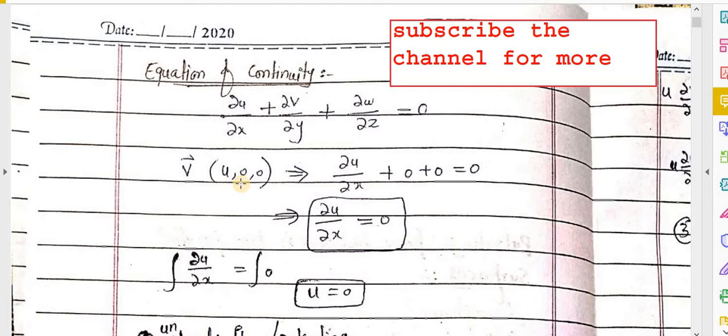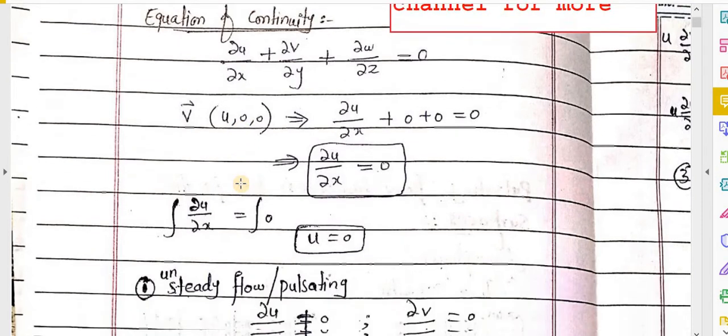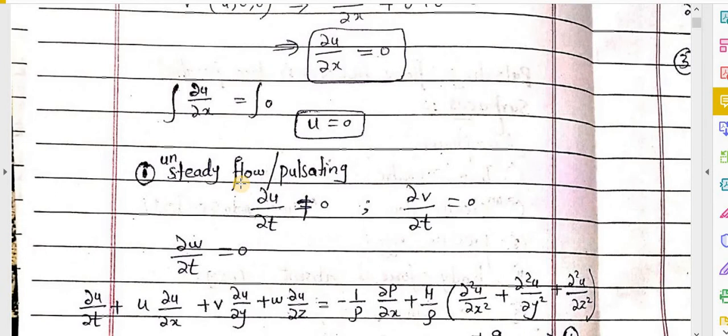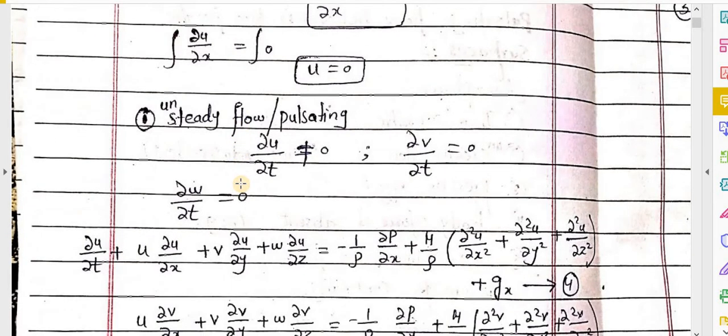This implies the equation of continuity will convert into ∂u/∂x = 0, which further implies u is equal to a function of t only. We are applying our assumptions one by one.